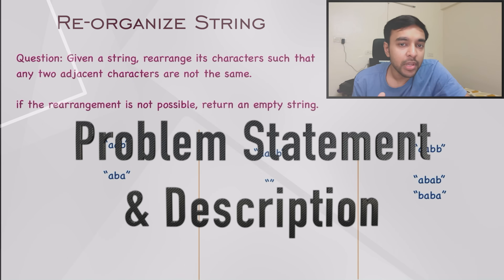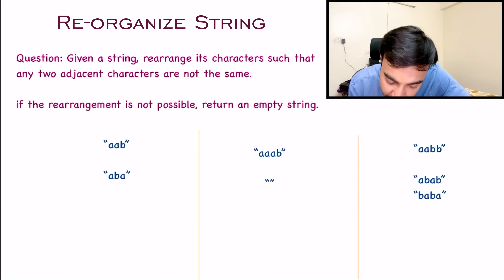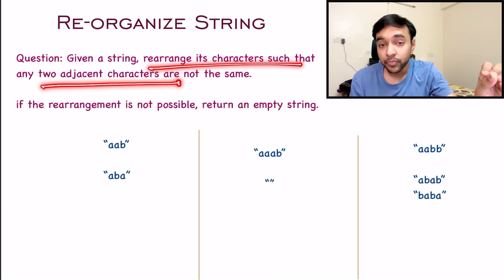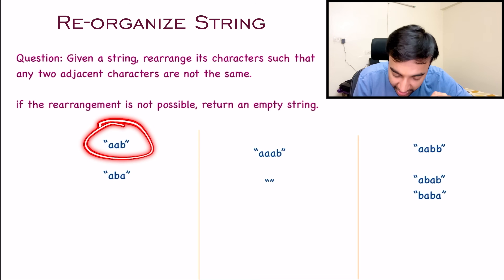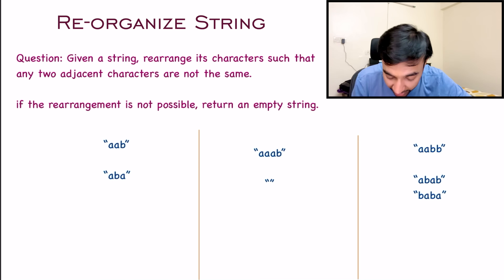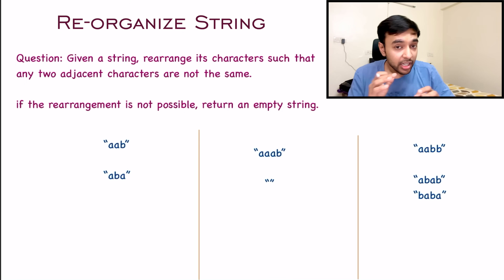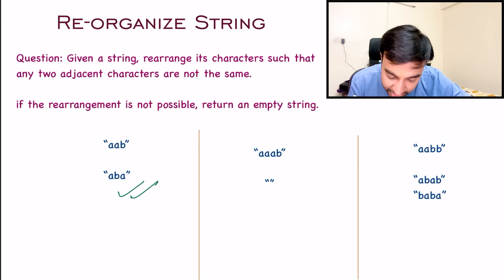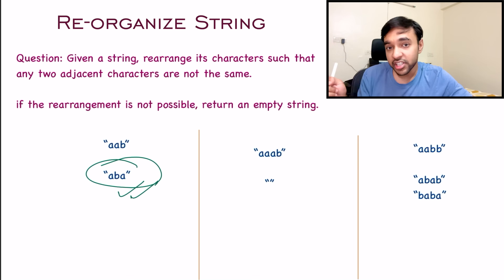Let's make sure we are understanding the problem statement correctly. In this problem, you are given a string and you just have to rearrange its characters such that any two adjacent characters are not the same. In our first test case, we have three characters: A, A, and B. You can see that these two same characters are adjacent. So you have to return a string where none of the same characters are adjacent. The answer for this test case is A, B, A — and you can see that in this string, there are no two adjacent characters which are the same.